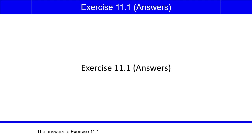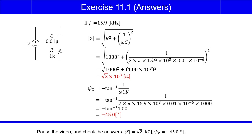The answers to exercise 11.1. Pause the video and check the answers. The magnitude of Z was square root 2 kilo-ohms, and psi Z was negative 45 degrees.